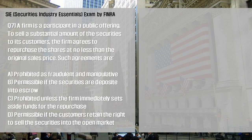A firm is a participant in a public offering. To sell a substantial amount of the securities to its customers, the firm agrees to repurchase the shares at no less than the original sales price. Such agreements are: A: prohibited as fraudulent and manipulative; B: permissible if the securities are deposited into escrow; C: prohibited unless the firm immediately sets aside funds for the repurchase; D: permissible if the customers retain the right to sell the securities into the open market.